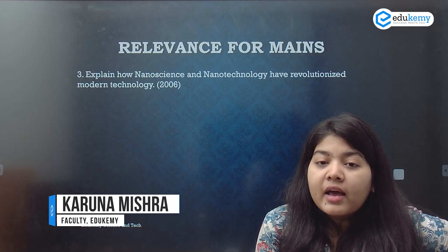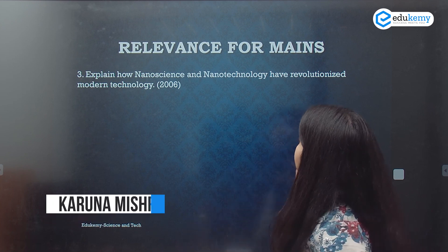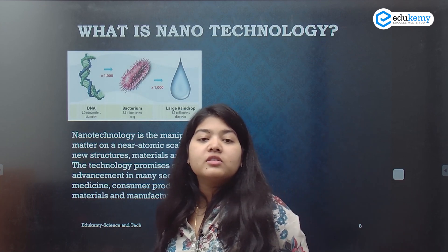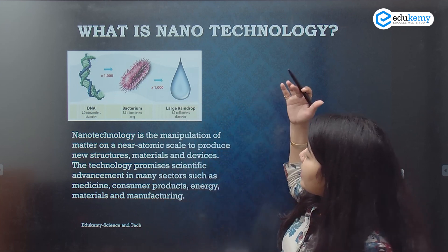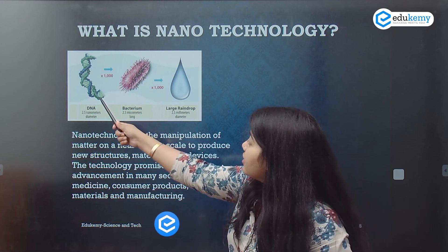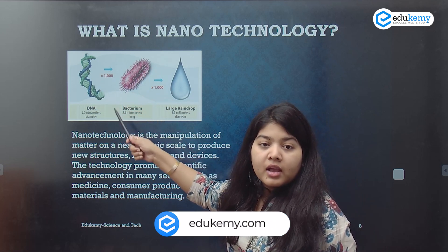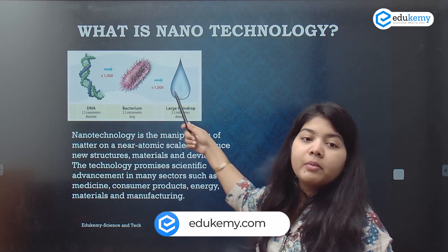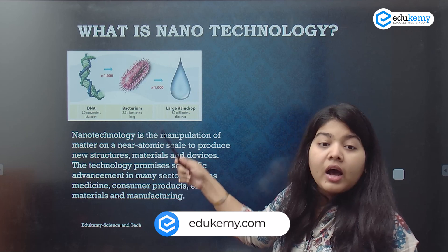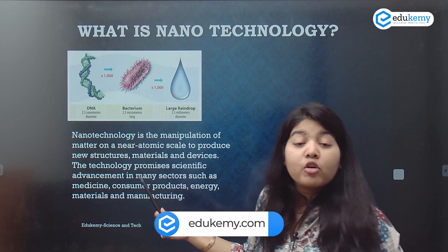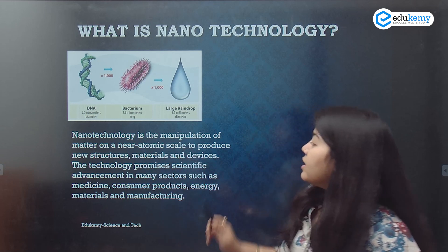Let us see the different types of applications and about nanotechnology in order to attempt this question. What is nanotechnology? DNA multiplied by a thousand times is a bacterium. A bacterium multiplied by a thousand times is a raindrop. Nanotechnology is the manipulation of matter at a near atomic scale to produce new structures, materials and devices.